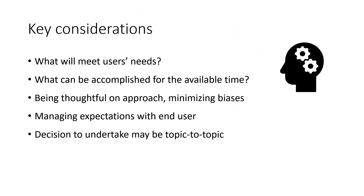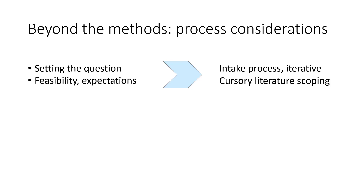There are some key considerations when undertaking a rapid review: thinking about the user's interest, what will meet their needs for the available time, and an initial sense of the volume of literature. Allowing empirical information and methodological expertise to guide what approaches should be used is important. Facilitating that upfront conversation with the commissioner or end user to manage expectations of the process and final product output is really important, as is whether to undertake a rapid review at all for a given topic. The upfront intake process is key — iteratively working through the scope with the end user to refine the question and determine what is feasible for the timeline.